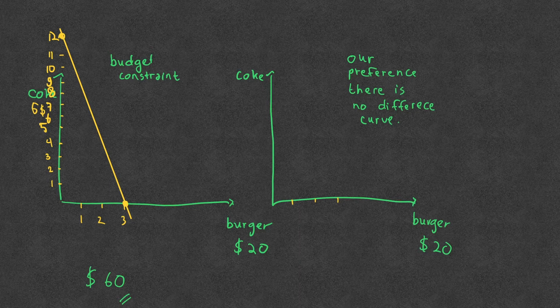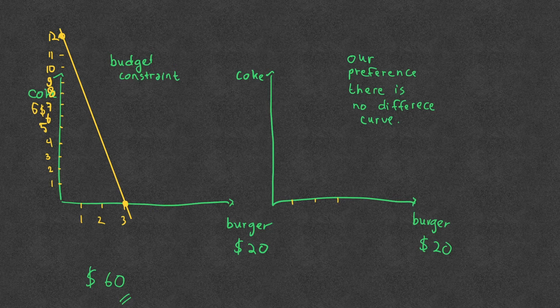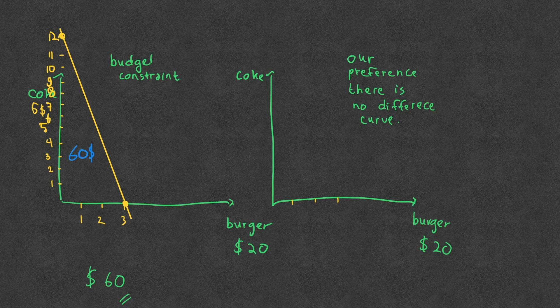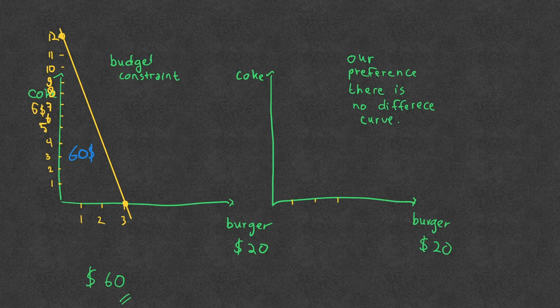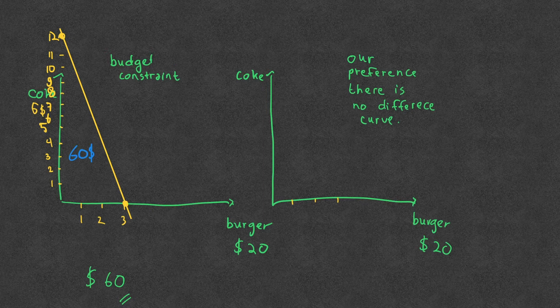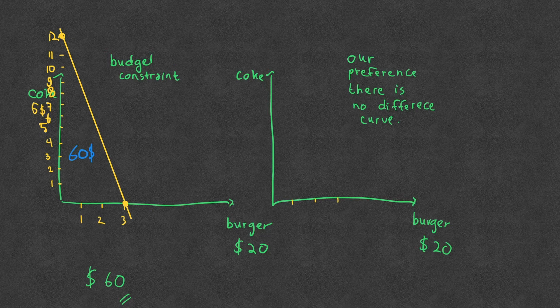So this is our budget constraint with $60, what we could buy. And then our indifference curve here, it looks like this. So what we could buy with the money that we have, our preferences look like this.